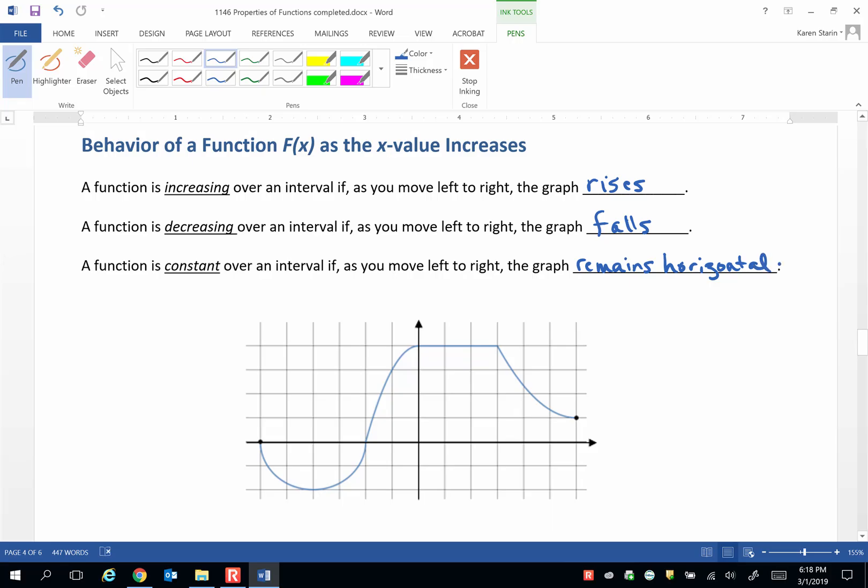Let's look at the example below. This function begins at negative 6 and it ends at positive 6. We document these intervals of increasing or decreasing or constant with open intervals. So I'm going to read this graph from left to right.